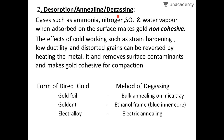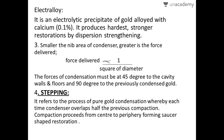Electrolyte is an electrolytic precipitate of gold mixed with calcium at a concentration of 0.1 percent. It produces the hardest and strongest restoration by dispersion strengthening. The smaller the diameter of the condenser, the greater the force delivered to the restoration — force delivered is inversely proportional to the square of the diameter. A smaller condenser tip means more force and fewer strokes required.